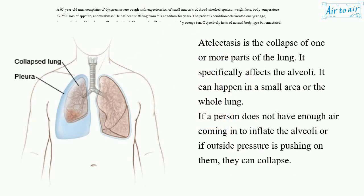Atelectasis is the collapse of one or more parts of the lung. It specifically affects the alveoli. It can happen in a small area or the whole lung. If a person does not have enough air coming in to inflate the alveoli, or if outside pressure is pushing on them, they can collapse.